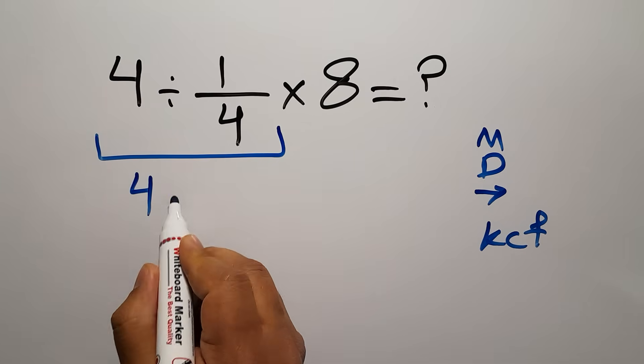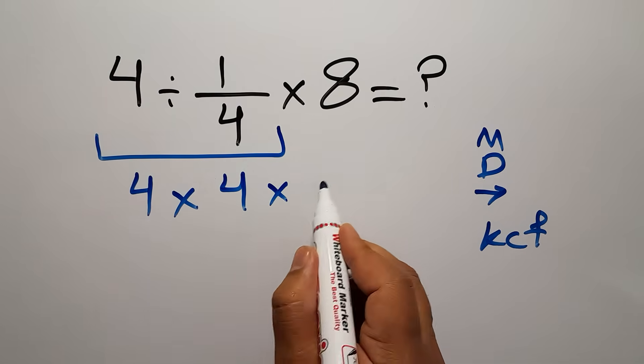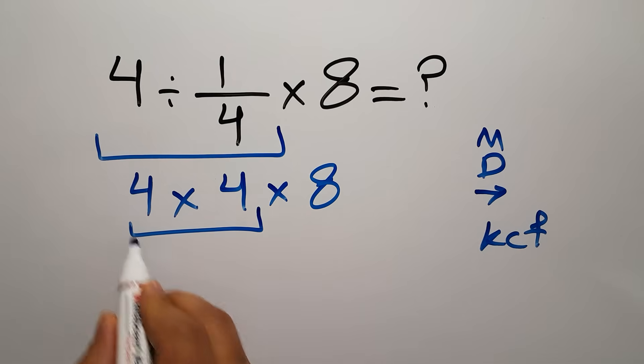So we can write 4 times 4, and here we have times 8. 4 times 4 gives us 16, so 16 times 8.